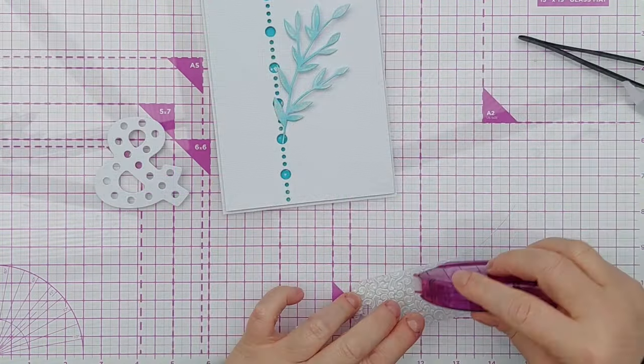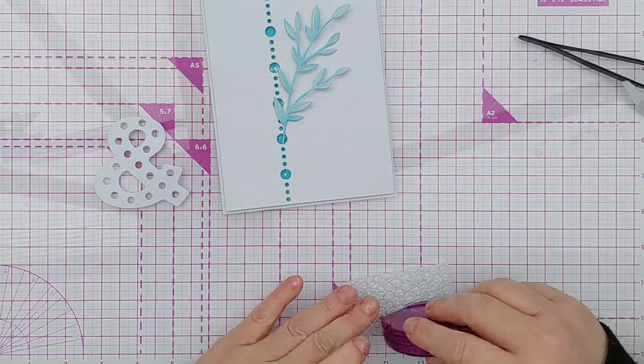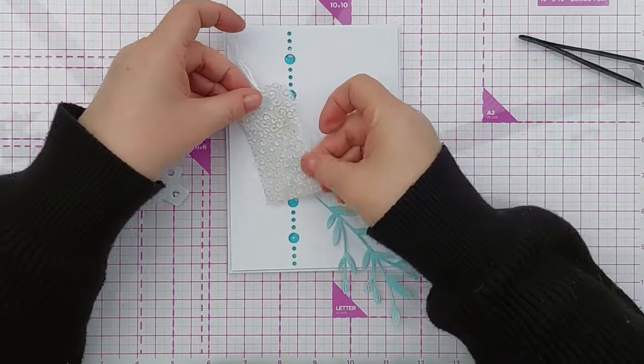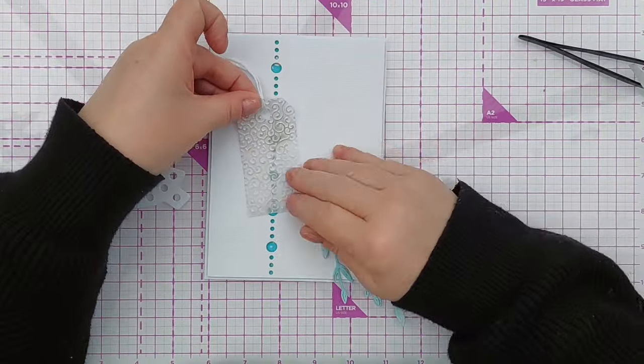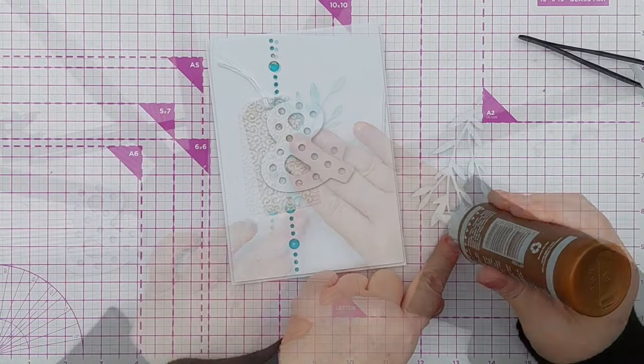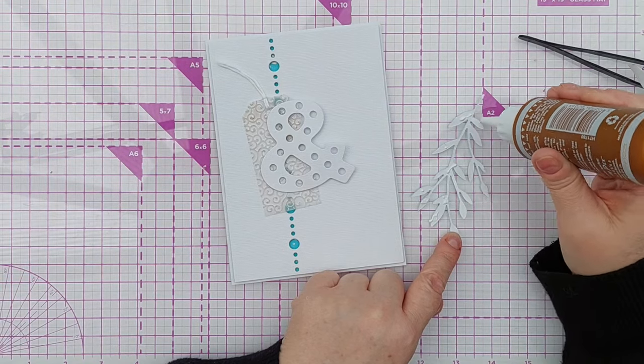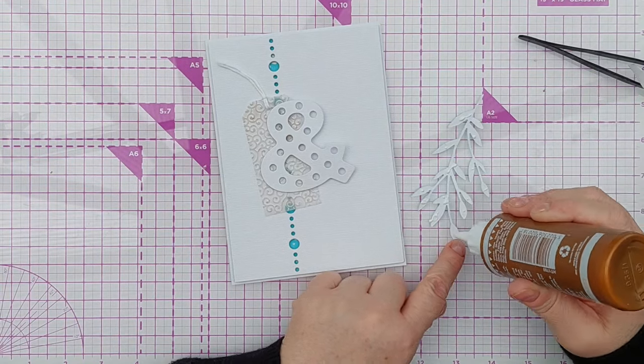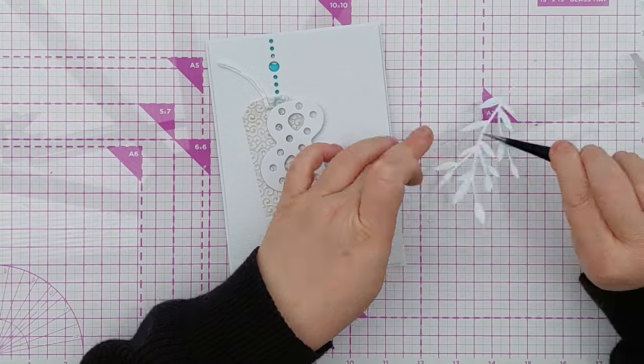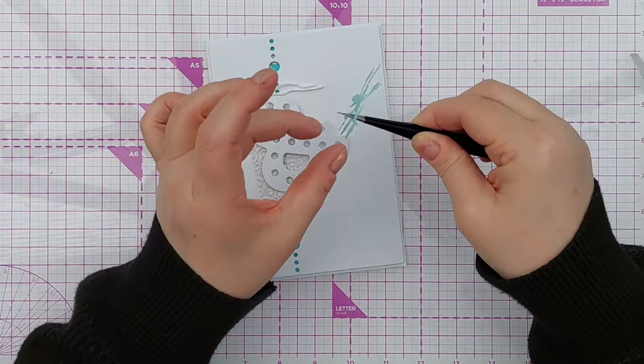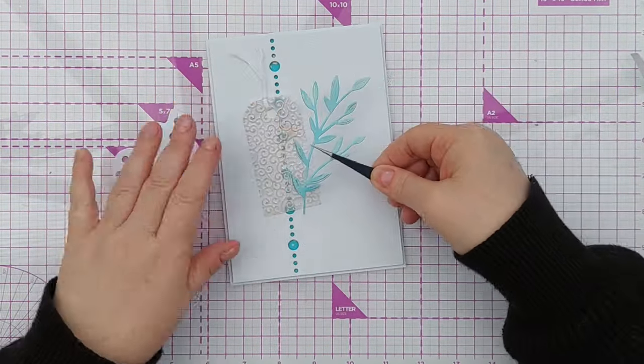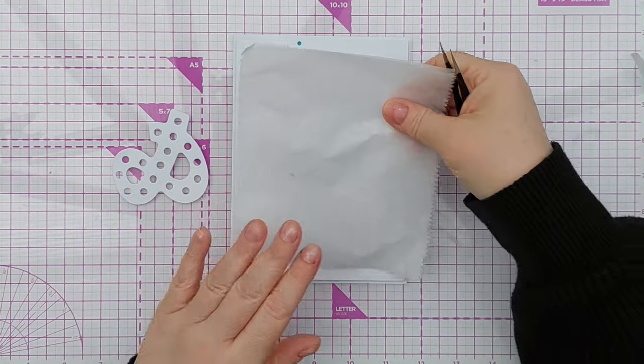To adhere the tag I used Crafter's Companion tape runner because it's very good at not showing through vellum. After that I added the branch using tacky glue. I just popped a few dots on the backs of the leaves and then pressed that down on the right hand side of the card to balance the tag which I'd placed to the left hand side of the card.